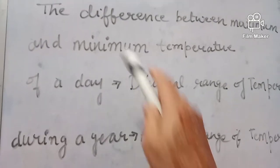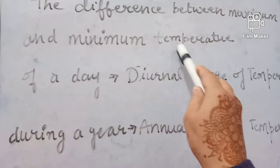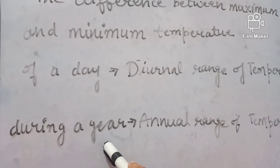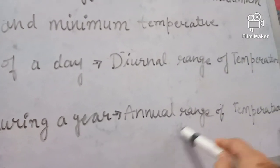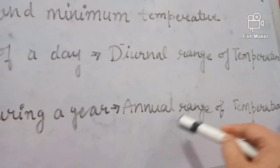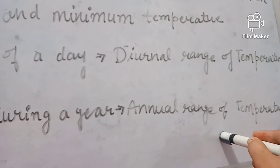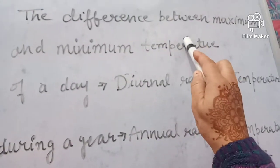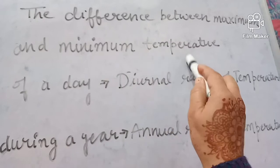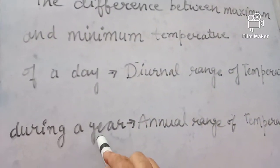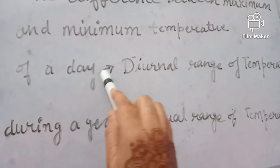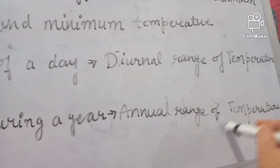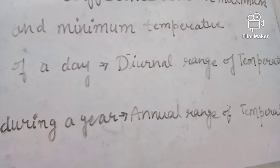The difference between maximum and minimum temperature during a year is called the annual range of temperature. So, the difference between maximum and minimum temperature during a day is called the diurnal range of temperature, and during a year it is called the annual range of temperature.